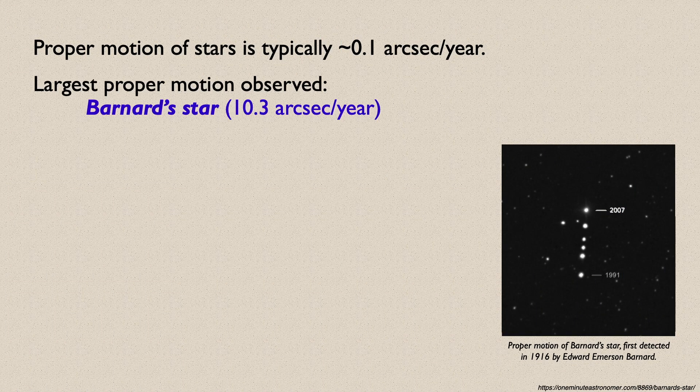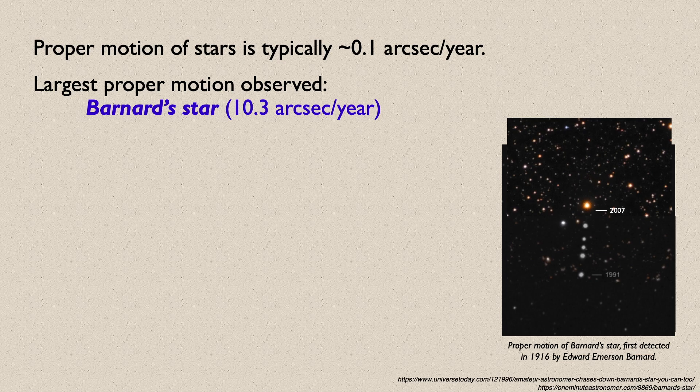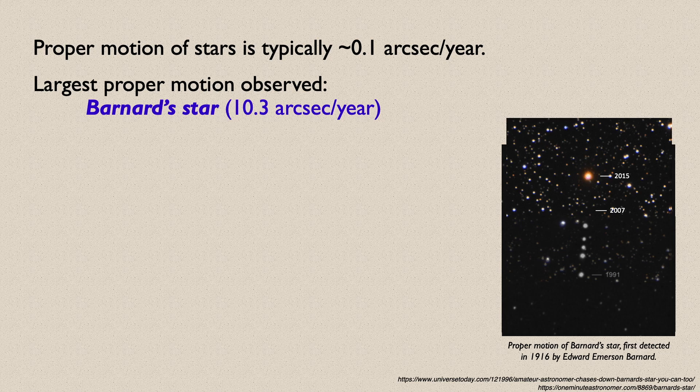Even for the star that has the largest proper motion observed, Barnard's star at a whopping 10.3 arc seconds per year, we still don't see a significant change in its position unless we track its motion over decades.